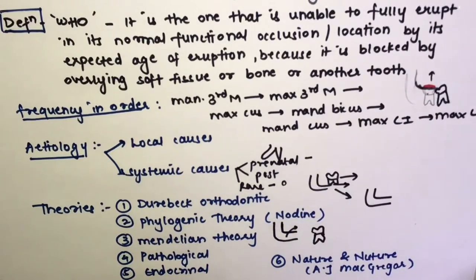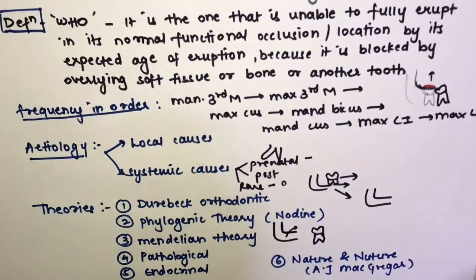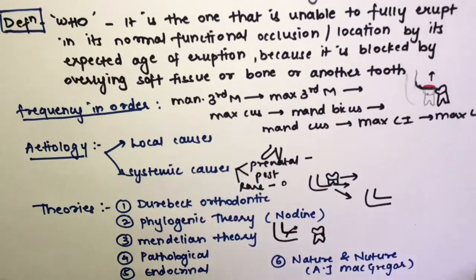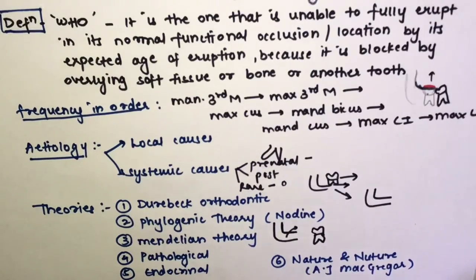The pathological theory states that osteosclerosis in the third molar area, caused by early disease of the adjacent molar, can cause chronic infection and lead to impaction. The endocrinal theory states that an increase or decrease in growth hormone can affect jaw size, and an imbalance between endocrines with lack of jaw growth leads to impaction.